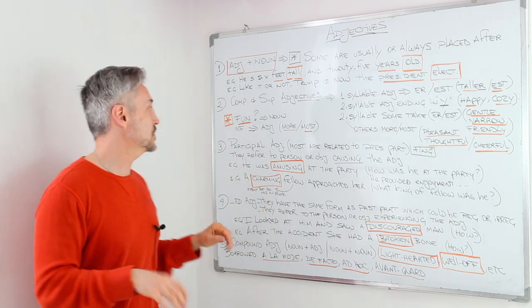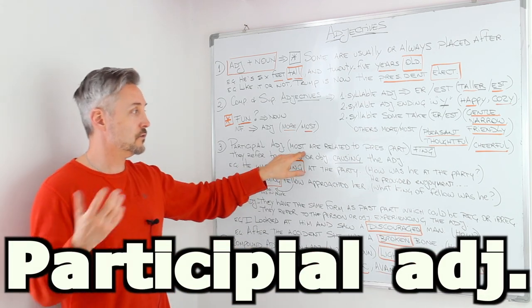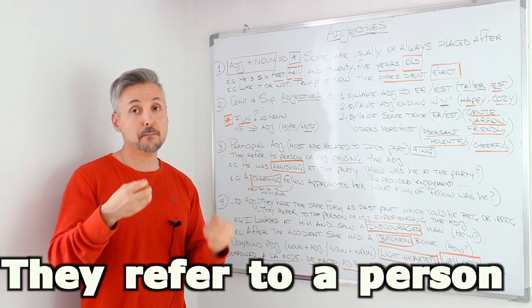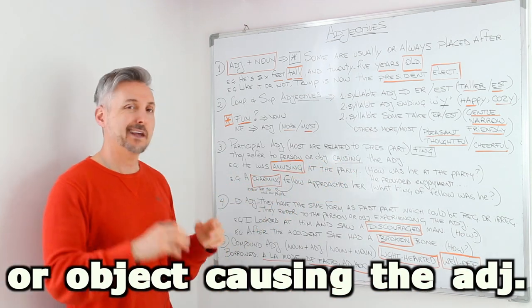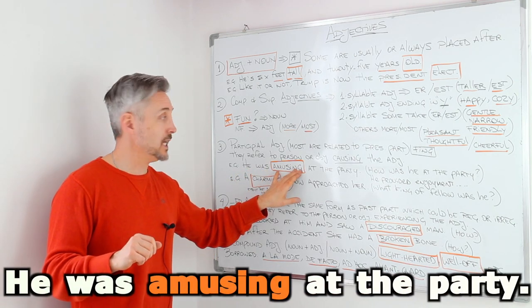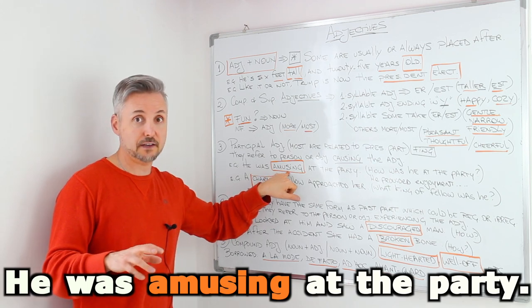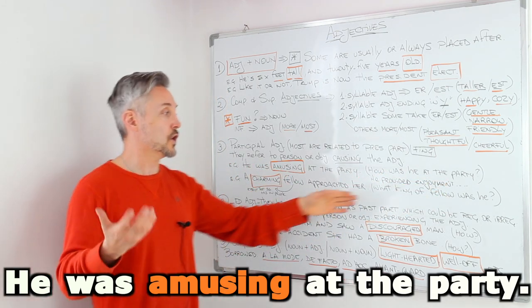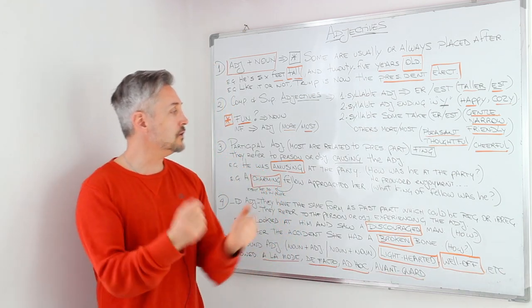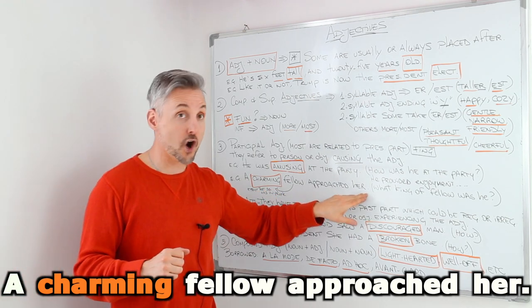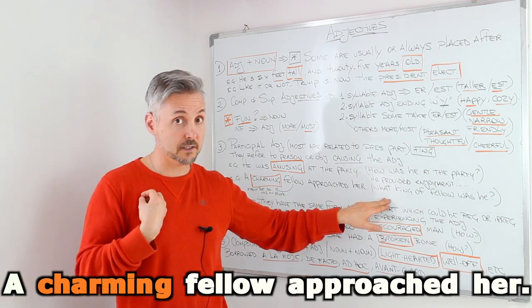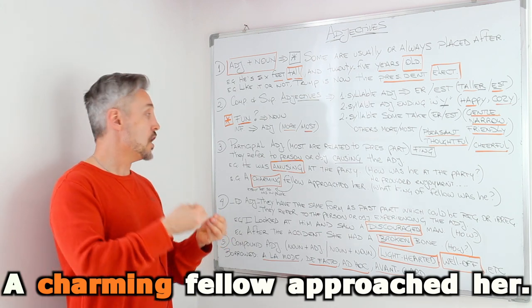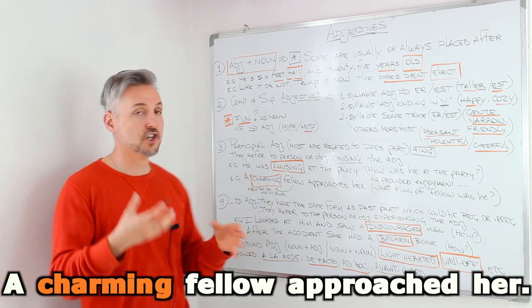Now the third point that I want to talk about is participial adjectives. They're related to present participles. So we add the ING. So they refer to a person or object causing the adjective. Let's take a look at the examples. He was amusing at the party. Here, amusing is an adjective. And so we can ask ourselves. How was he at the party? He was amusing. So he provided enjoyment. Another example. A charming fellow approached her. What kind of fellow was he? We can ask ourselves. So he was charming. So charming here is an effect that somebody has on people. In this case, right? Charming. So it's the adjective.